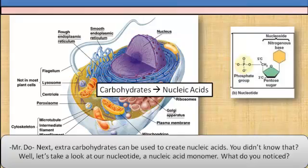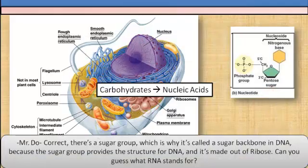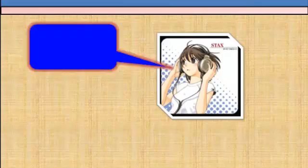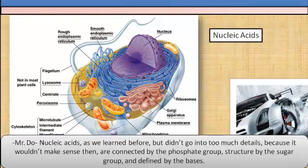Let's take a look at our nucleotide, a nucleic acid monomer. There's a sugar group, which is why it's called a sugar backbone in DNA. The sugar group provides the structure for DNA, and it's made out of ribose — can you guess what RNA stands for? Nucleic acids are connected by the phosphate group, structured by the sugar group, and defined by the bases.